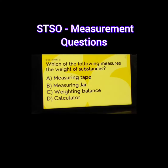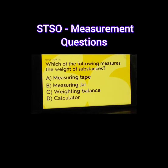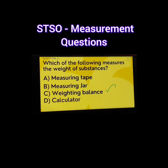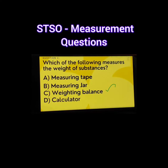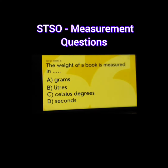Question number 2. Which of the following measures the weight of substances? The options are A. Measuring tape, B. Measuring jar, C. Weighing balance, D. Calculator. The correct answer is C. Weighing balance.